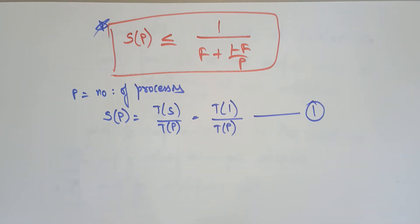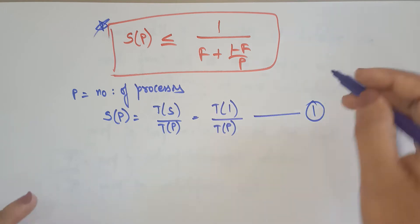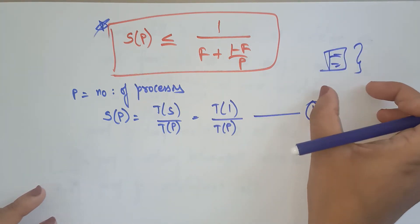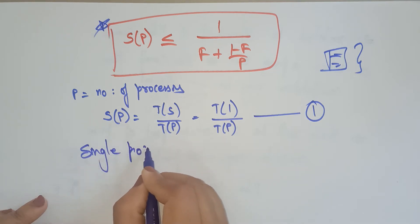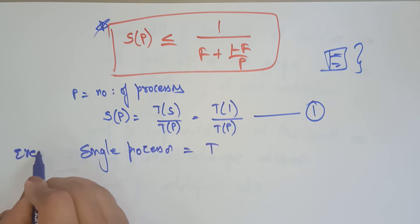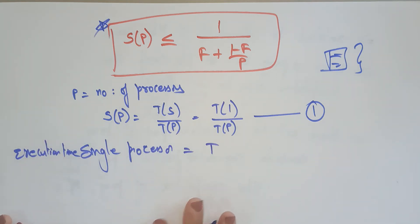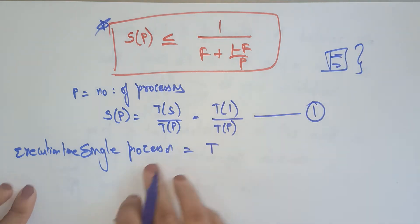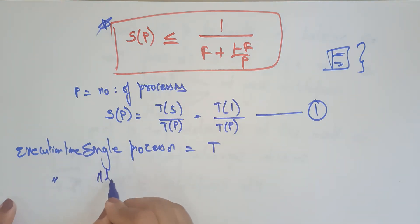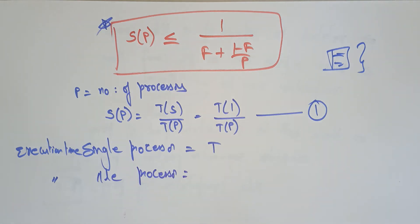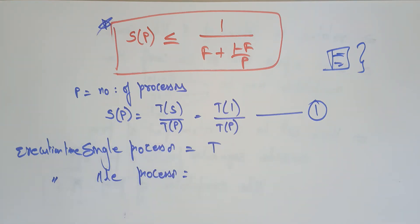Now, let the execution time required to complete the given task on a computer with a single processor be T. This is the execution time for a single processor. When the same task is executed on a parallel computer with P processors, the time depends on sequential as well as parallel time.